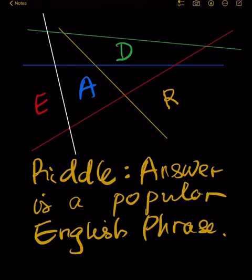Hello guys, in this video we will see this rebus. You see a lot of colored lines and some English characters. The answer is a popular English phrase. Pause the video if you need more time to solve it by yourself.